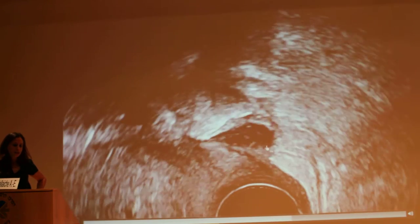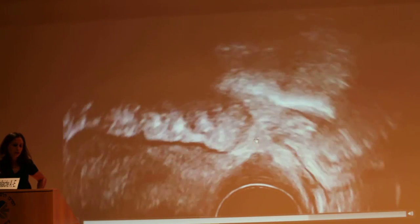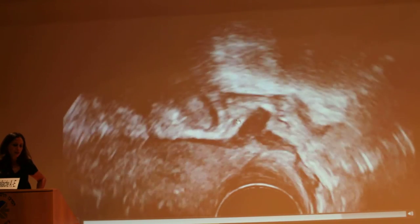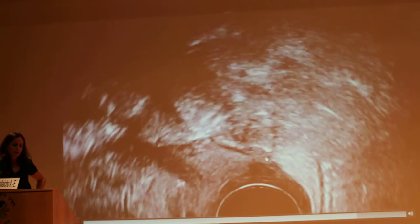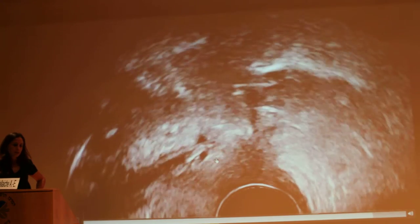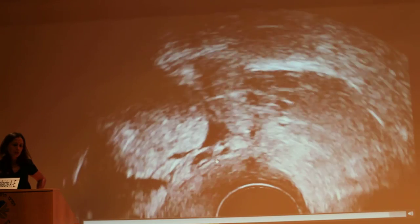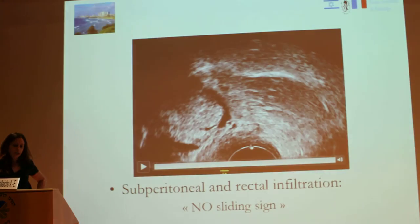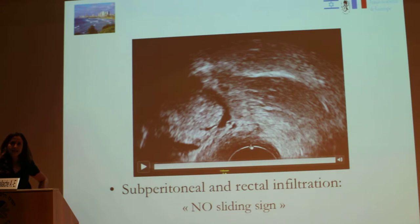It is important to recognize the adhesions just behind the uterus. Here you have a digestive location where the rectum and the uterus are stuck together and there is no sliding sign.